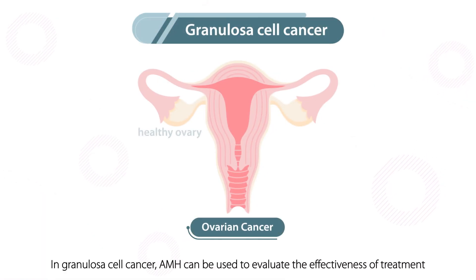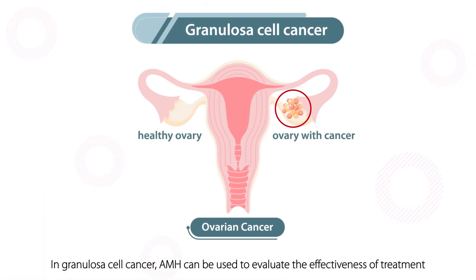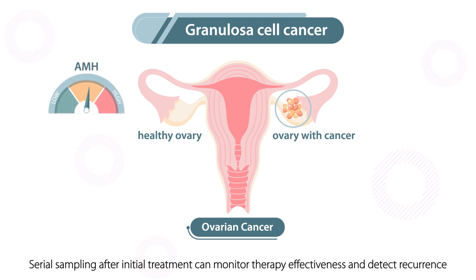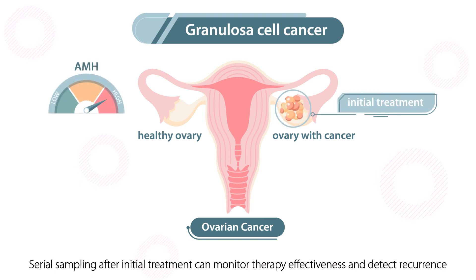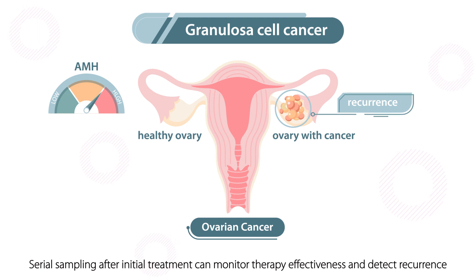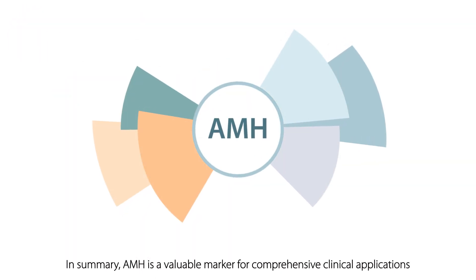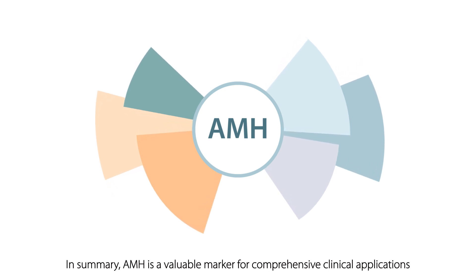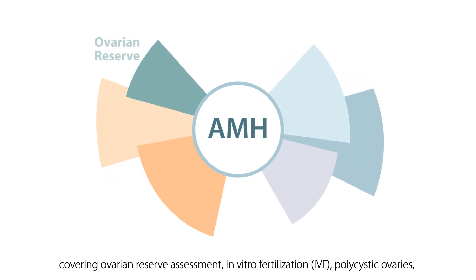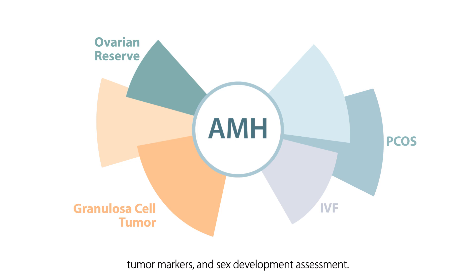In granulosa cell cancer, AMH can be used to evaluate the effectiveness of treatment. Serial sampling after initial treatment can monitor therapy effectiveness and detect recurrence. In summary, AMH is a valuable marker for comprehensive clinical applications covering ovarian reserve assessment, in vitro fertilization, polycystic ovaries, and tumor markers and sex development assessment.